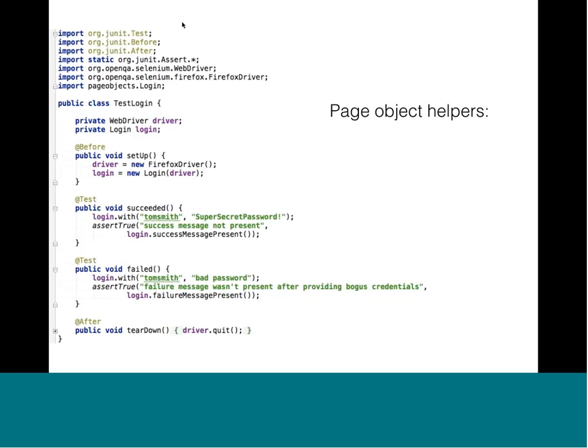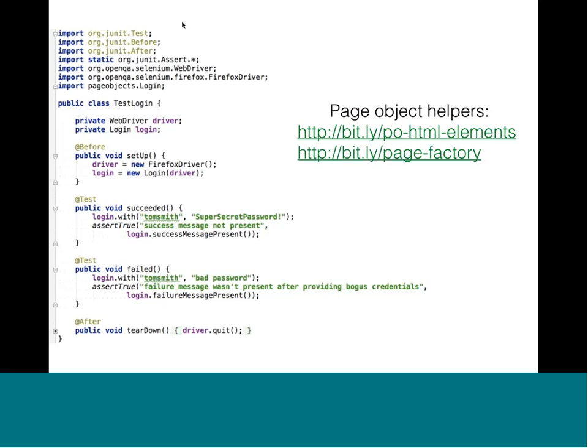There's a lot to talk about with page objects — numerous talks and blog posts exist. Two common approaches are the HTML Elements library by Yandex, which makes page object creation more streamlined than plain Java objects, and something built into Selenium called PageFactory. There's also the notion of a base page object — also known as a Selenium wrapper or utility class — which is the next evolution. Let me step through the core tenets of it.